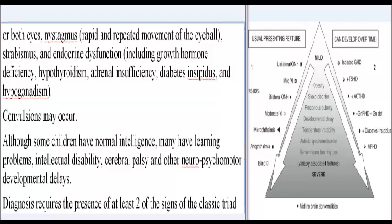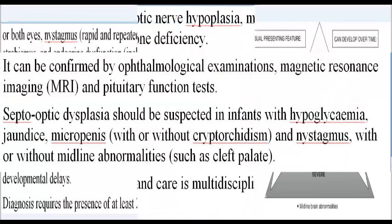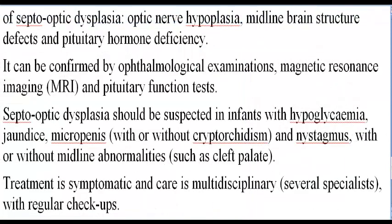Diagnosis requires the presence of at least two of the signs of the classic triad: optic nerve hypoplasia, midline brain structure defects, and pituitary hormone deficiency. It can be confirmed by ophthalmological examinations, magnetic resonance imaging (MRI), and pituitary function tests.